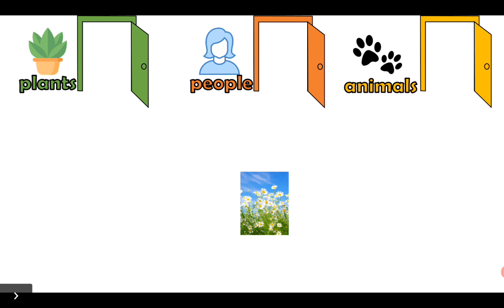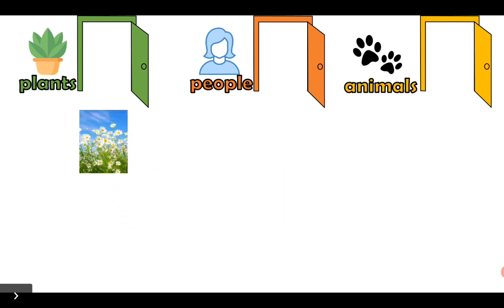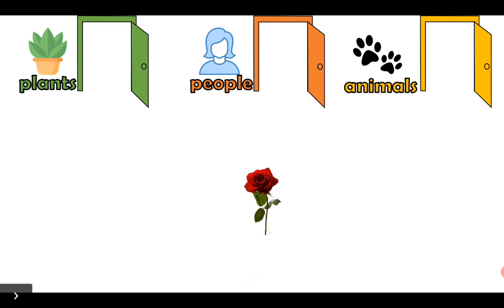What type of living thing is this? Is it a plant? Is it a person? Or is it an animal? Fantastic! Wonderful! This is a plant! Bye-bye, plant! What type of living thing is this? Is it a plant, or is it an animal? It's a plant! Bye-bye, plant!